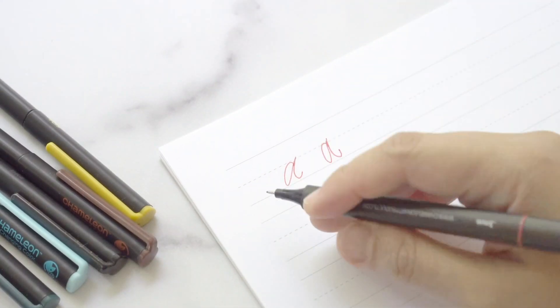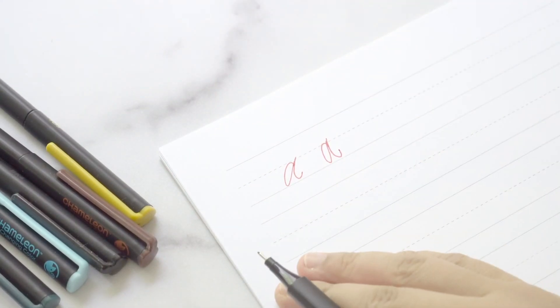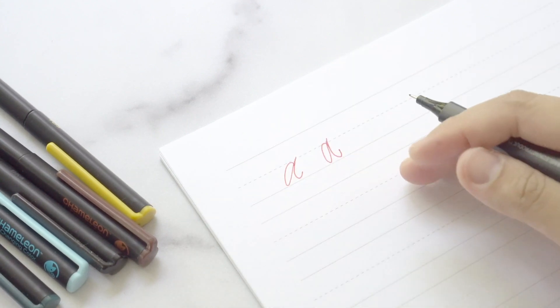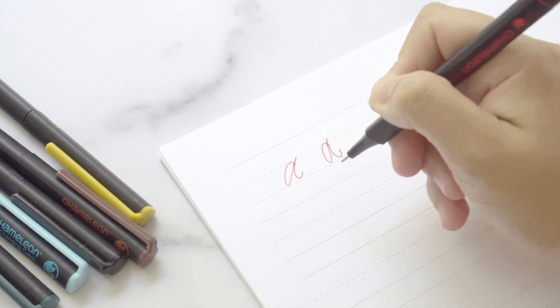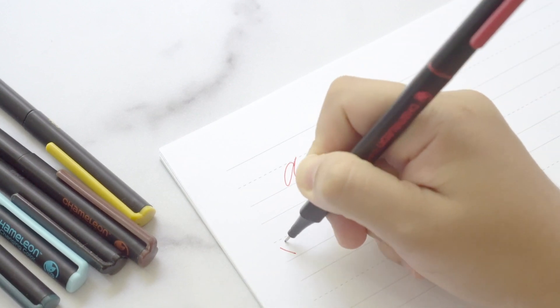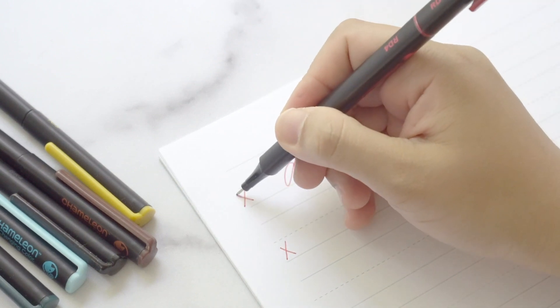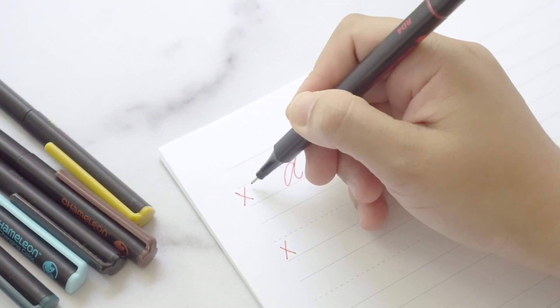The guideline usually will consist of horizontal lines like this. But for reference in our practice, what I'm going to do is put an X mark on this area over here. This X mark in calligraphy, we call it the X height.